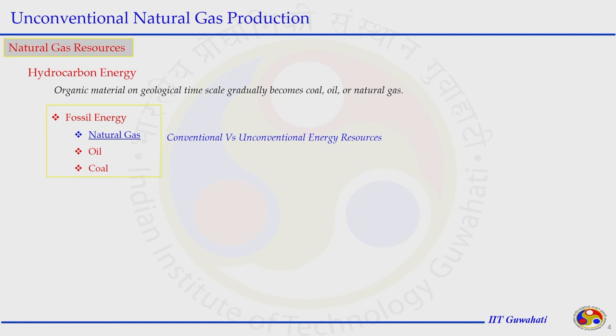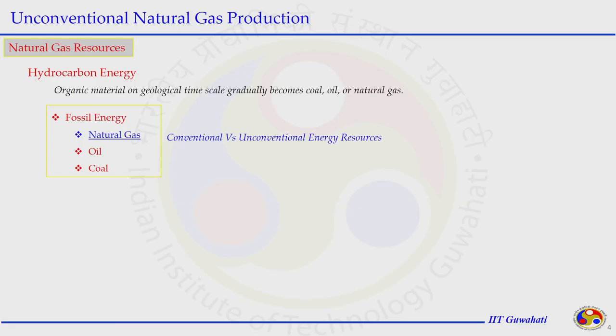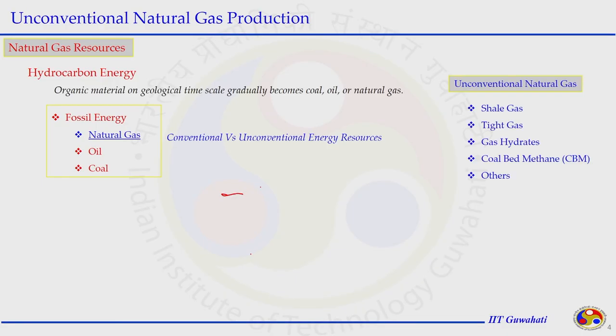If we look at unconventional natural gas production in terms of natural gas resources as part of hydrocarbon energy — where organic material got converted on a geological time scale to fossil fuels: coal, oil, and gas — the unconventional natural gas resources include shale gas, tight gas, gas hydrate, and coal bed methane. These are fossil fuel waste things, so to speak.